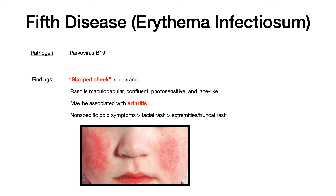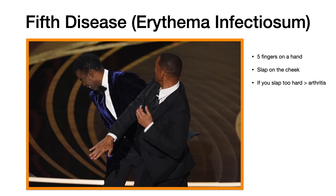Here's a useful mnemonic: fifth disease — fifth for the number five. There are five fingers on a hand, and you use a hand to slap somebody. When you slap somebody across the face, you're hitting them on their cheeks, which helps you remember that fifth disease causes slapped cheek appearance. And don't slap too hard, because if you do, you might get arthritis in your hand — which helps you remember that fifth disease is associated with arthritis.